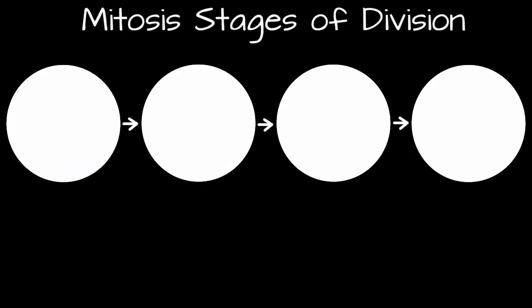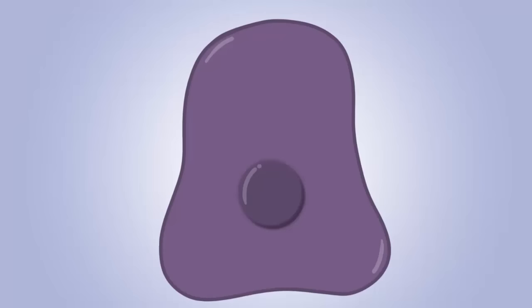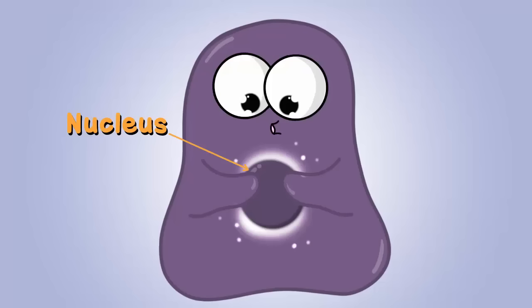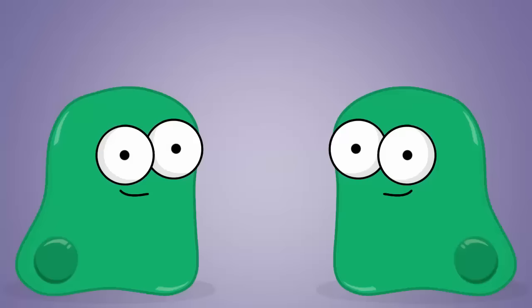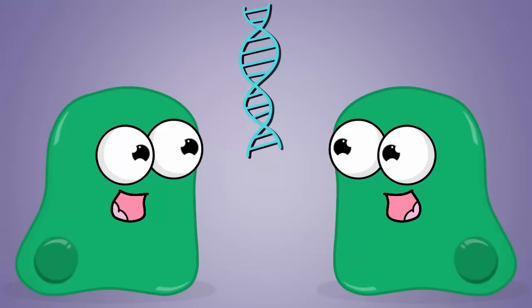Before we get into the steps of division, it's really important to understand that your cells have something inside them, an organelle called the nucleus. And the nucleus holds your DNA. DNA is really important because it's your genetic information. And if you're going to make more cells, you need to have the same DNA in those new cells as you did in your original cells.